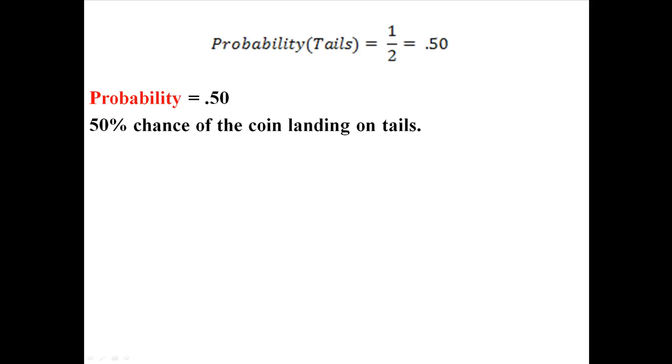So the probability of getting tails is 1 divided by 2, because there are two different outcomes, and one of them is tails. So 1 divided by 2 is 0.50, or 50%. There's a 50% chance that when you flip a coin, you will get tails.